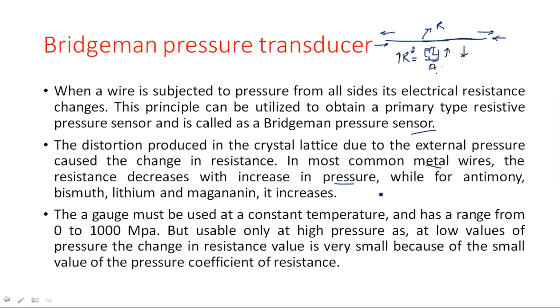The gauge must be used at a constant temperature and has a range from 0 to 1000 MPa. However, it is usable only at high pressure, because at low values of pressure the change in resistance is very small due to the small value of the pressure coefficient of resistance. The remaining pressure measurement types will be discussed in the next video.